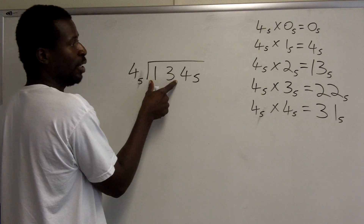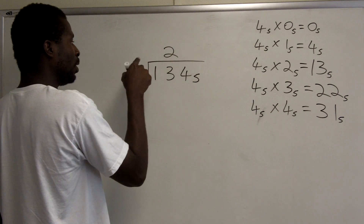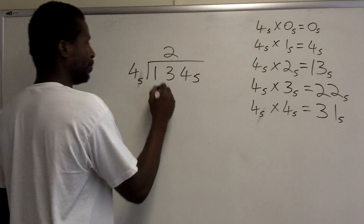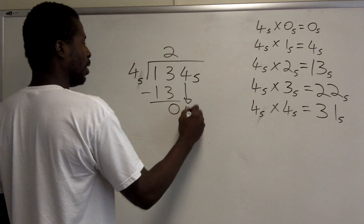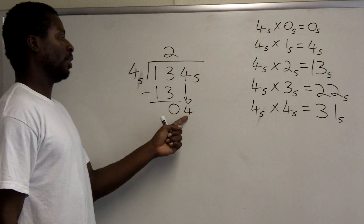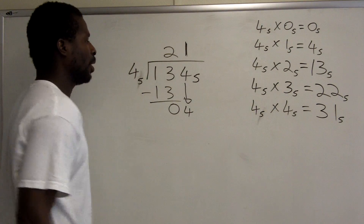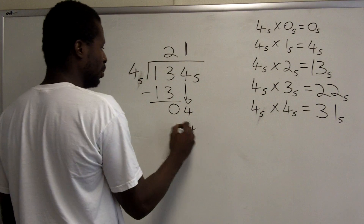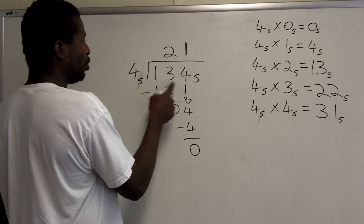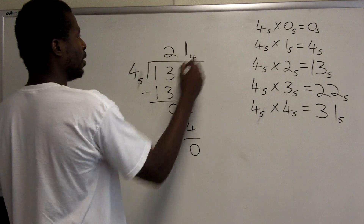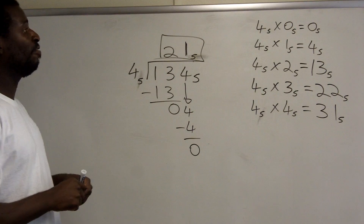So 4 goes into 13 in base 5 exactly twice. I put a 2 above the 3 and multiply 2 times 4, which is 13, then subtract and get 0. I bring down the next digit, which is 4. 4 base 5 goes into 4 base 5 exactly one time, so the next numeral is 1. 1 times 4 is 4; I subtract and get no remainder. So 134 base 5 divided by 4 base 5 is 21 base 5.